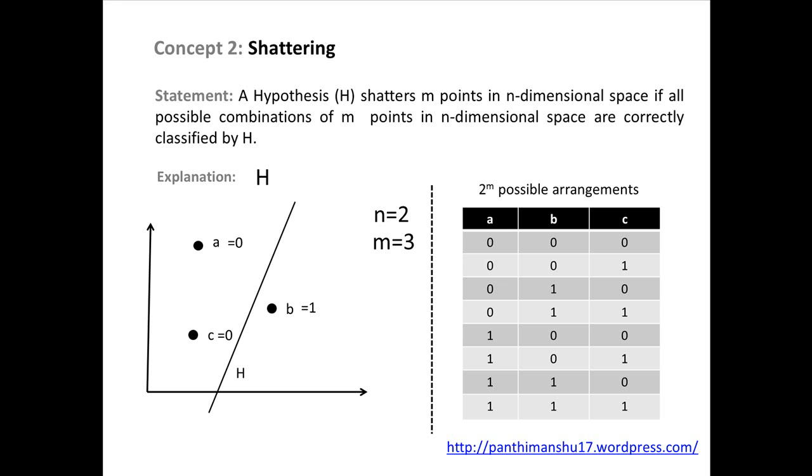So, it can be said that a straight line shatters three points in two dimensions, provided points are in general position. Now, let's take a case of four points: a, b, c, and d.